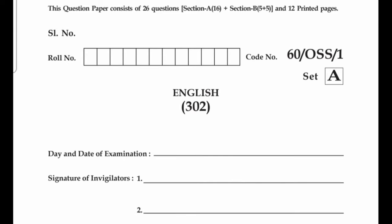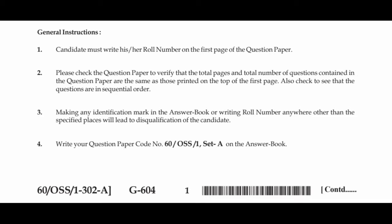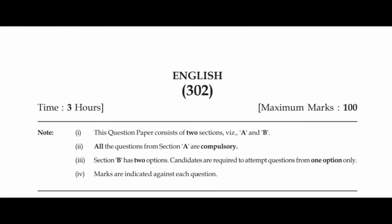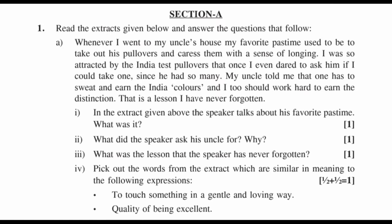Hello students, today I am going to solve NOS 302 English Question Paper of February 2021. This question paper consists of 26 questions. Section A has 16 questions and Section B has 5 plus 5 questions. Maximum marks is 100 and passing marks is 30 only. Total time duration is 3 hours. All questions from Section A are compulsory. Section B has 2 options — attempt only 1 option.